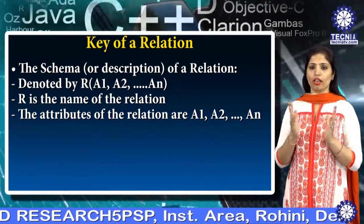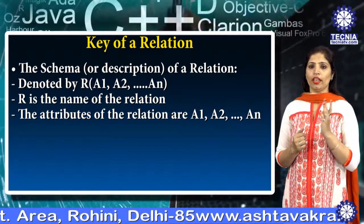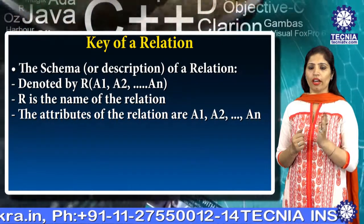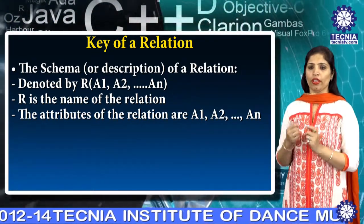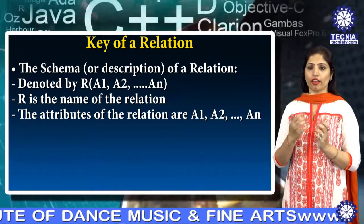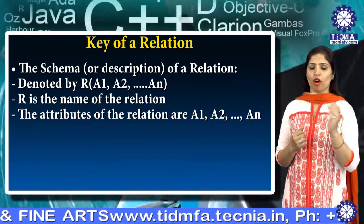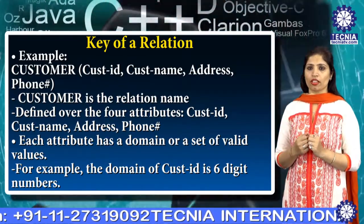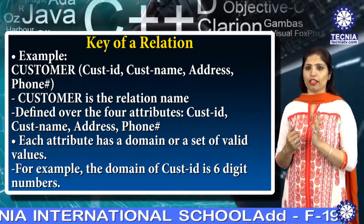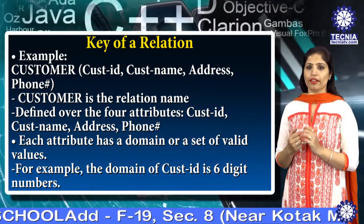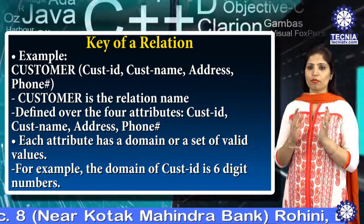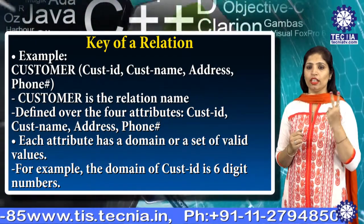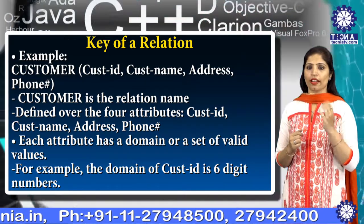Next is relation schema. A relation schema describes the relation name (the table name), attributes and their names. The schema is denoted by R(A1, A2, A3, ..., AN), where A1, A2, A3, and AN are the attributes and R is the name of the relation. For example, if we want to create a relation for a customer, we must have attributes like customer ID, customer name, address, and phone number, where customer is the relation name defined over those four attributes.